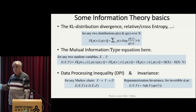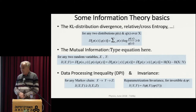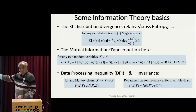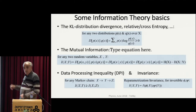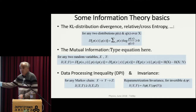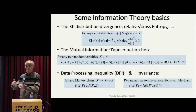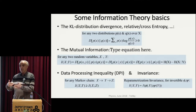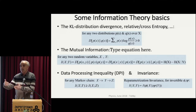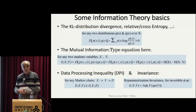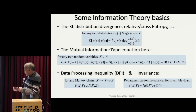I need two properties of mutual information. The first is what we call the data processing inequality: if I have a Markov chain X, Y, Z and so on, information can only go down. The information about the input in every one of the layers can only decrease when I move through this multi-layer process.